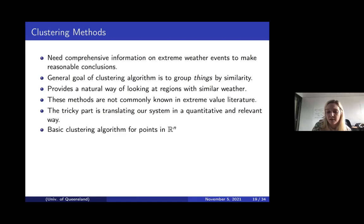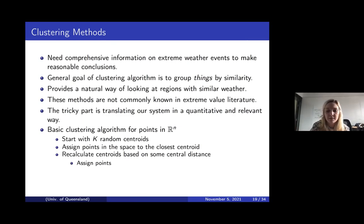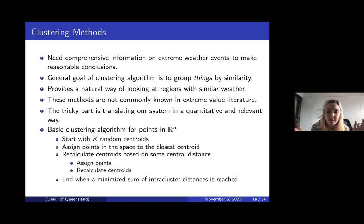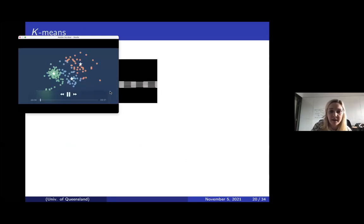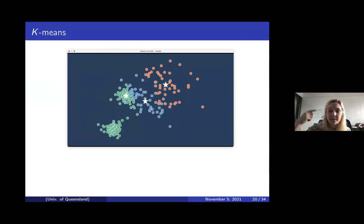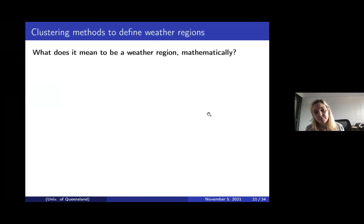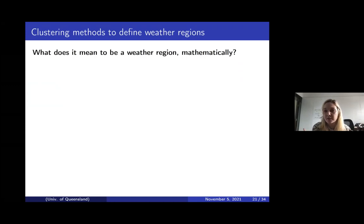The basic clustering algorithm for points in R^n looks like this: we start with k random centroids, assign points to the closest centroid, recalculate the centroid based on some distance, reassign points, recalculate centroids, and end when we've minimized the sum of inter-cluster distances. That's the concept. I made a little video of what k-means looks like: we have three starting centroids, points are reassigned to a centroid in each iteration, the centroid is recalculated, and once we reach that minimum distance the centroids don't change anymore.